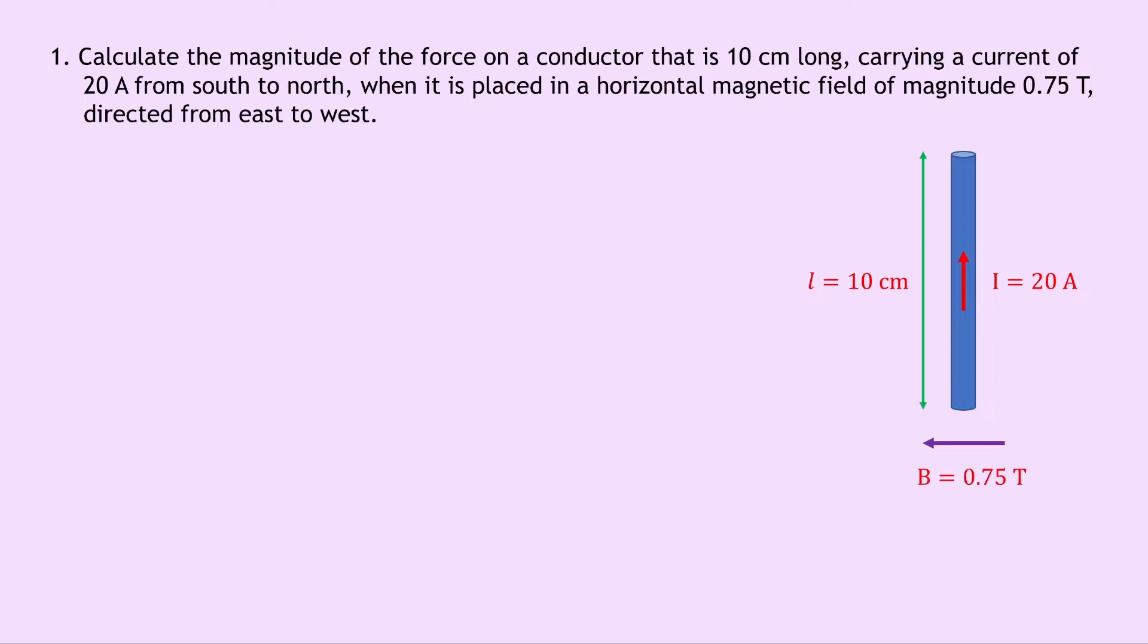We can then write down what we know from the question so we're trying to find the force F. We know that the current I is 20 amps. We know L is 10 centimetres which we need to change into metres so that's 0.1 metres and we know that B is 0.75 tesla. We also know that the angle theta between the direction of the magnetic field and the current direction is 90 degrees. So writing down the equation we have F equals ILB sin theta, substituting in the numbers gives us 20 times 0.1 times 0.75 times sin 90 and sin of 90 just gives us 1 so this simply gives us 1.5 newtons once you put it into your calculator.